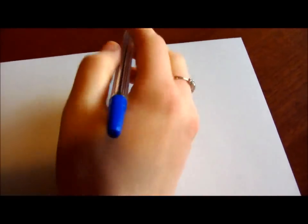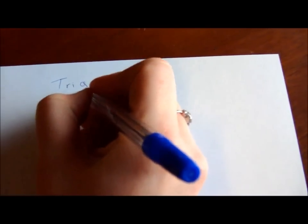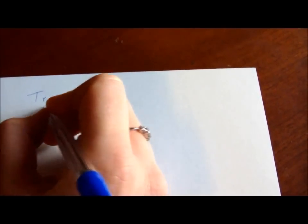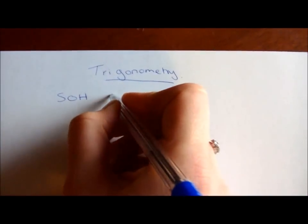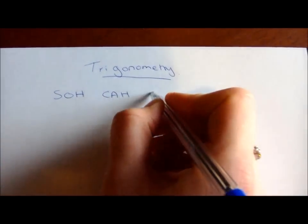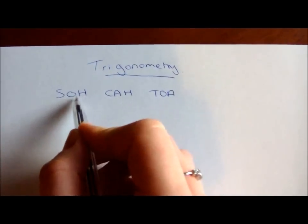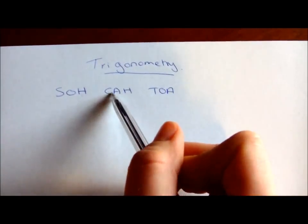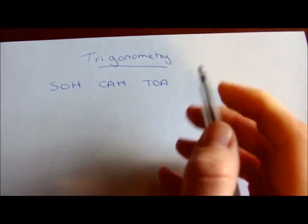In this tutorial we're going to look at trigonometry. This includes SOHCAHTOA, which means: sine equals opposite over hypotenuse, cos equals adjacent over hypotenuse, and tan equals opposite over adjacent.